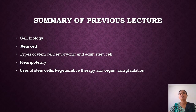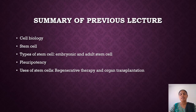Then, we learned about pluripotency — the ability of the stem cell to get differentiated or transformed into any type of cell. We also learned about the uses of stem cells in two types: cell therapy or regenerative therapy, and organ transplantation.